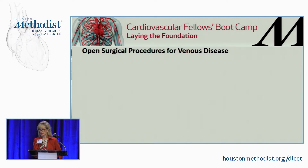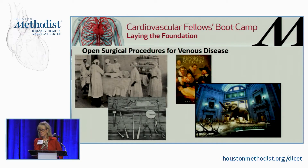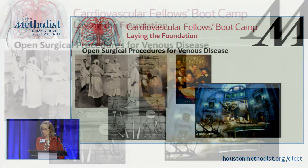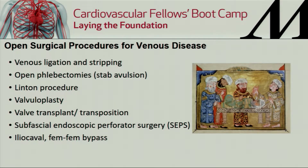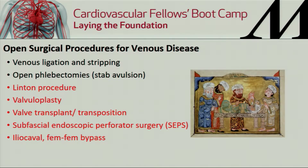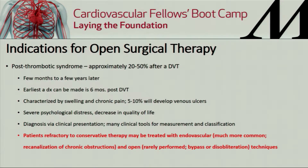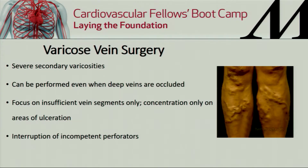I will mention open surgical procedures, since we've talked about ballooning and stenting for iliac vein lesions. Most people consider open procedures of historic interest only, but you need to be aware of them — only you as a vascular surgeon can offer these to appropriate patients. There are multiple open surgical procedures; some like the Linton procedure and SEPS are older, but there are bypasses and valve transplant procedures you need to know about. Indications are really patients refractory to conservative management or those who have failed or cannot have endovascular treatment.